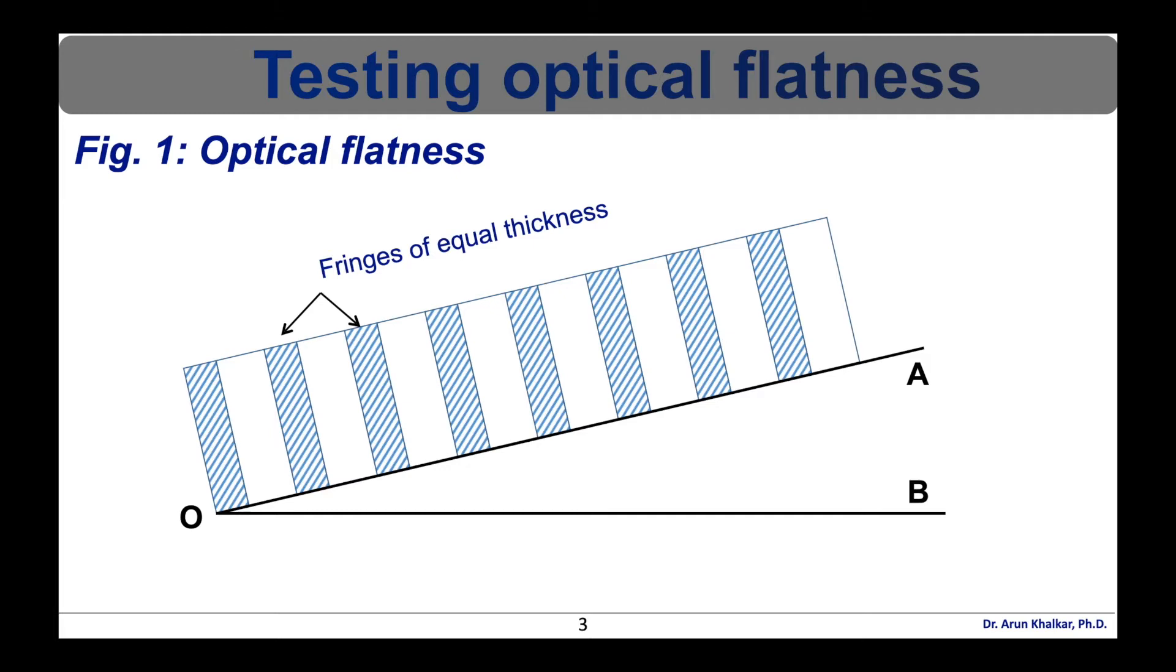The phenomenon of interference is used in testing the plainness or flatness of the surface. If the two surface OA and OB are perfectly plain as shown in this figure, the air film between them gradually varies in thickness from point O to A. The fringes are of equal thickness as each fringe is the locus of the points at which the thickness of the film has a constant value. If the fringes are not of equal thickness, it means that surface is not plain.